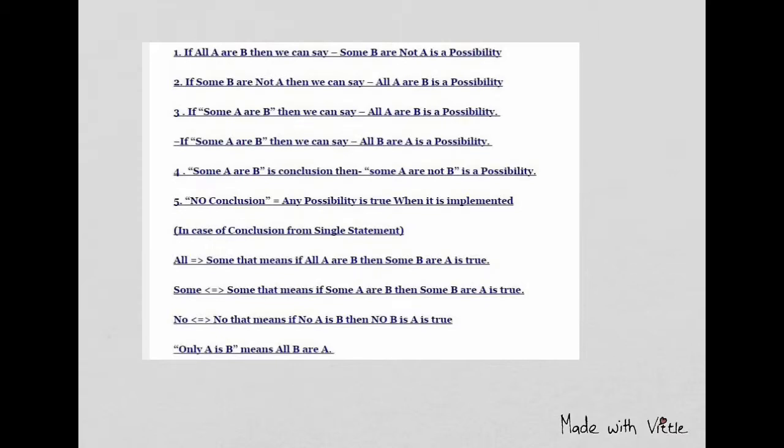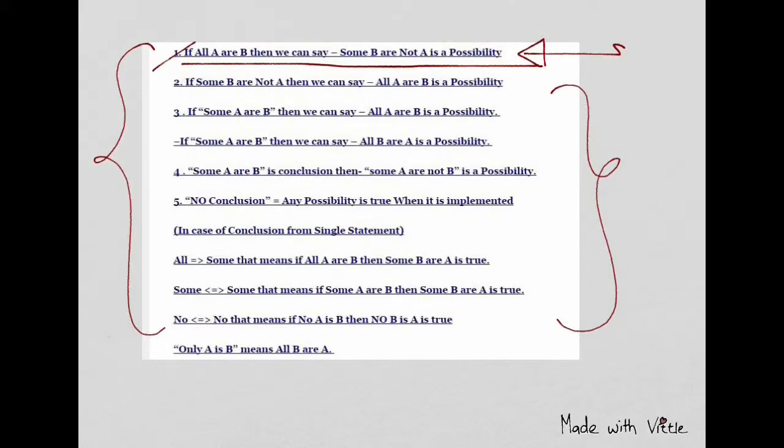The last example which we discussed was whenever we say if all A are B, some B are not A is a possibility here. You should read this so you can find there are certain exceptions from the tick cross method, and basically they react only when they are in the possibility case. That's why Bank PO asks you the possibility case. You don't need to worry that there are a thousand exceptions. It follows exactly a concrete pattern. If you just memorize a few of them, see how many are there: one, two, three, four, five, and then these are just normal theories.